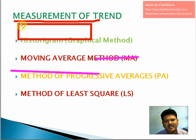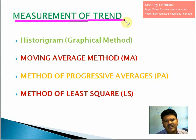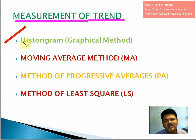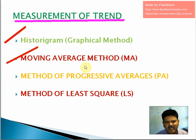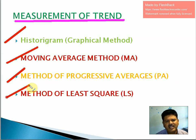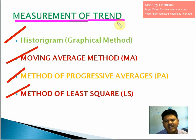There are four ways of measuring trend. The first way is the histogram method. The second one is the moving average method, also known as the MA method. The third one is the method of progressive averages, that is the PA method. And the last one is the method of least squares, known as the LS method. By using all these methods, we can measure the value of trend.